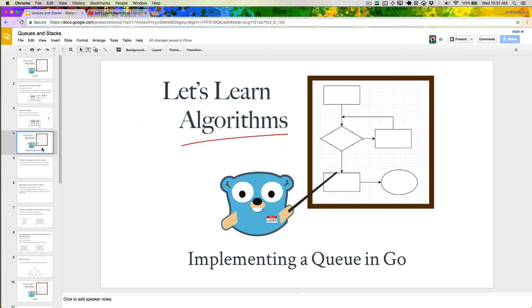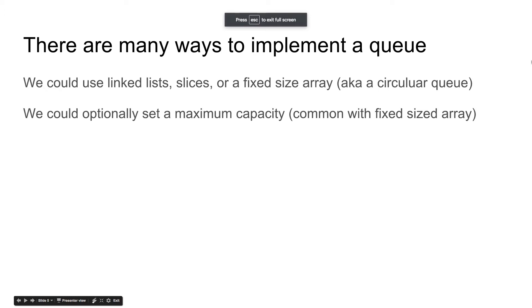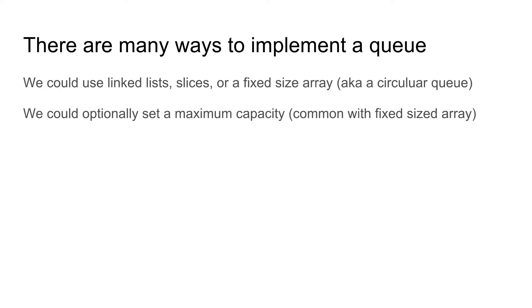Now that you have a rough idea of what a queue is, we're going to look at how to implement a queue in Go. There are a lot of different ways to implement a queue and you can use all sorts of different data structures — like linked lists, slices, a fixed size array, or in Java an array list. It really depends on what makes the most sense for you. You can also do optional things like setting a maximum capacity — a queue that allows at most five items.